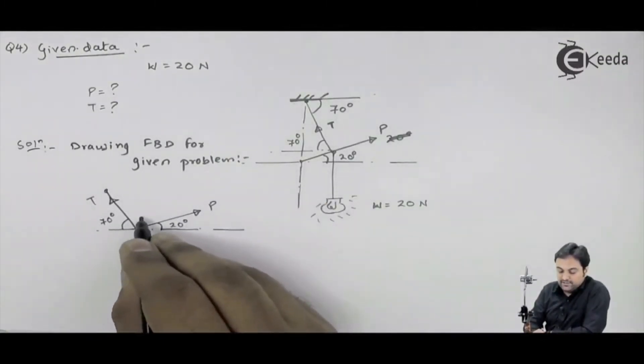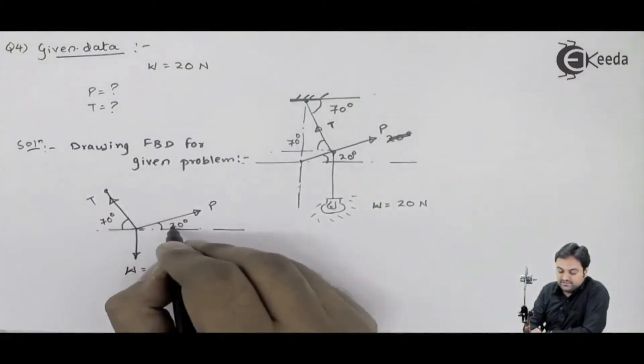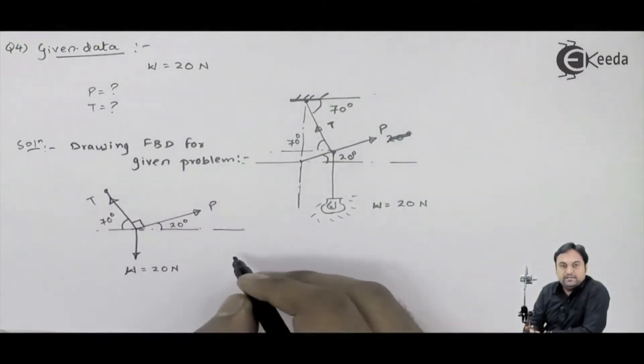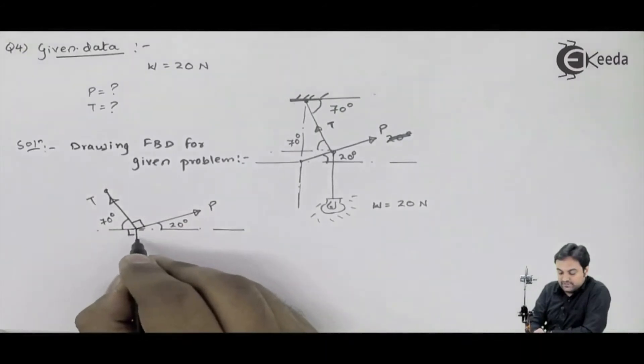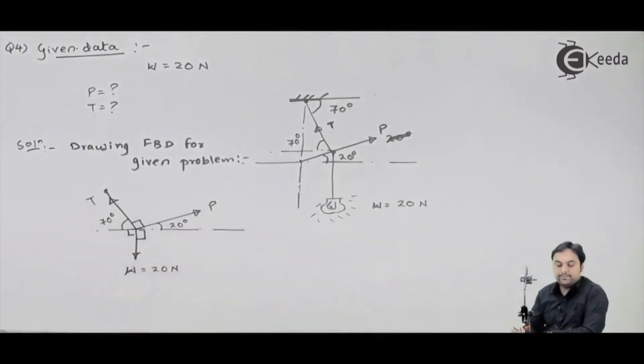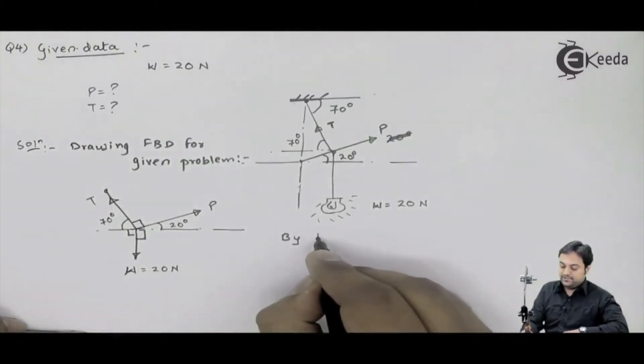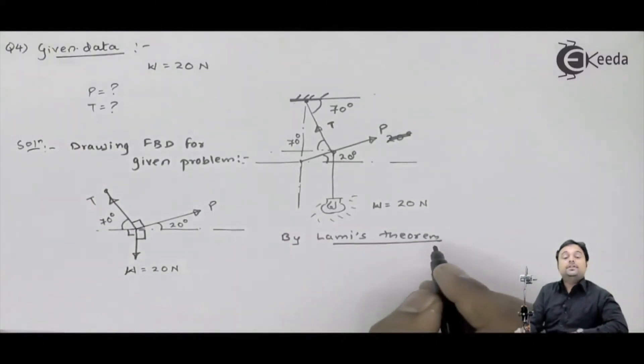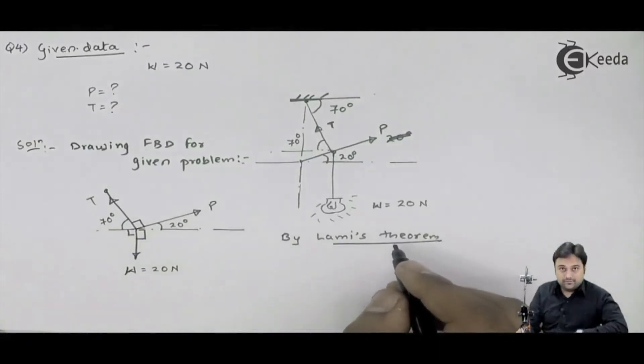So what angle remains in between is 70 plus 20, that's 90. So even this angle would be 90, and here also have 90, this is also 90 degrees. With this much data provided we can easily solve the question by using Lami's theorem. So I can say by Lami's theorem, Lami's theorem is applicable to 3 concurrent forces.